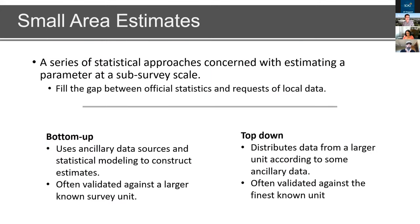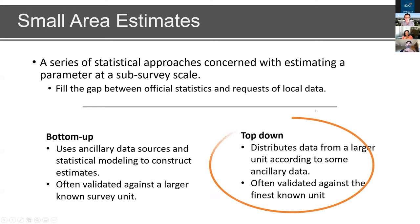When we talk about small area estimates, there are two primary camps. The first is bottom-up, where you use data sources and statistical modeling to construct an estimate from the ground up and compare it against some known larger unit. In contrast, top-down methodologies start with a larger estimate and distribute it to a finer level, then validate against the finest known unit. We are focusing on top-down methodology because we already deliver statistics at state, county, and city level throughout California, and we need consistency with existing estimates.